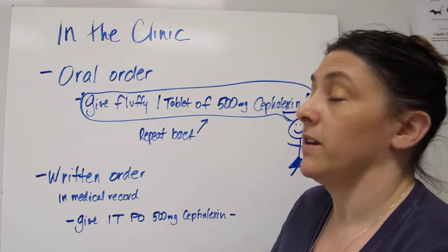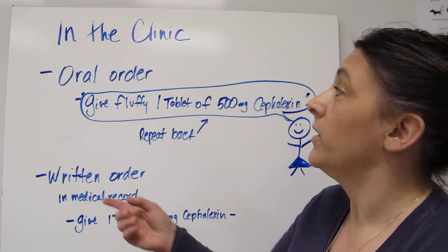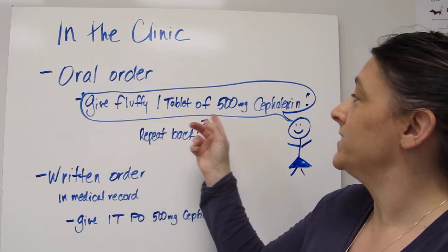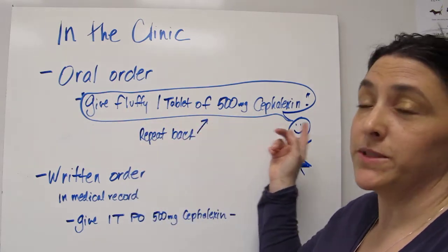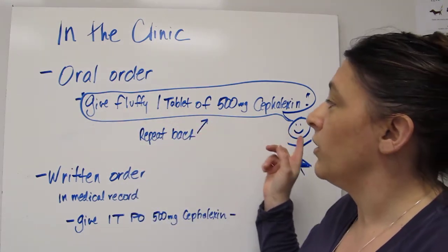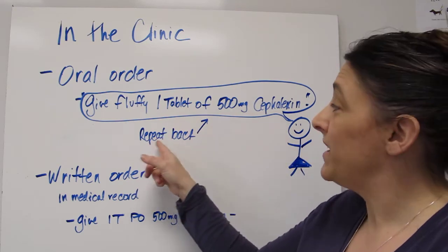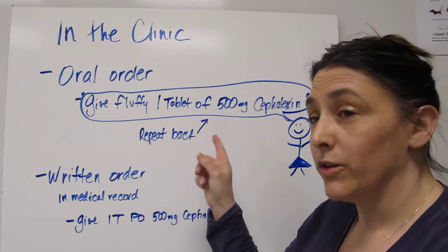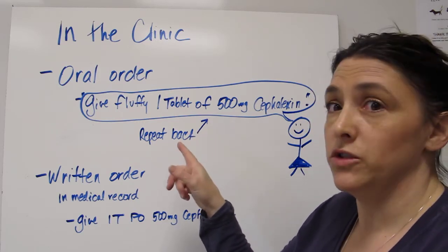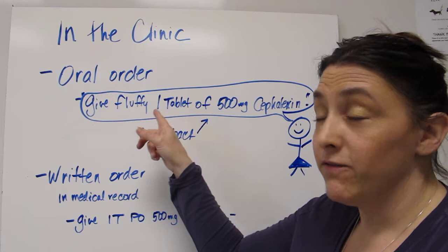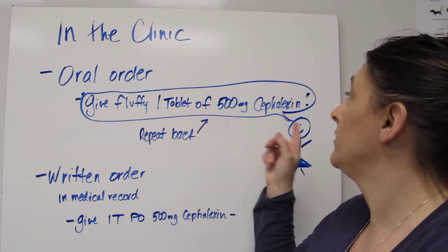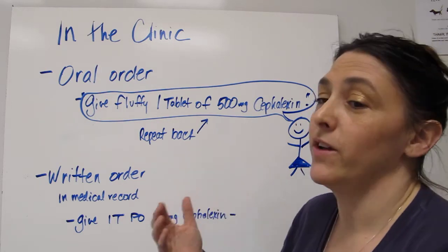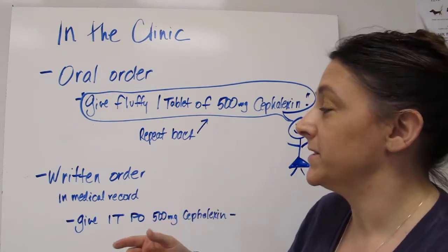In the clinic the veterinarian could give you an oral order and basically it could say give Fluffy one tablet of 500 milligram Cephalexin. So you want to make sure you repeat it back to the veterinarian so that you are clear and they are clear on what you are to do. You want me to give Fluffy one tablet of 500 milligrams Cephalexin, they should say yes or if there was a mistake let you know what the mistake is.